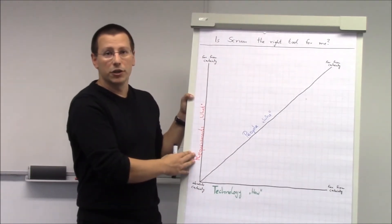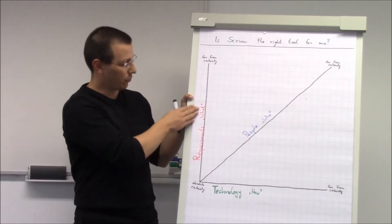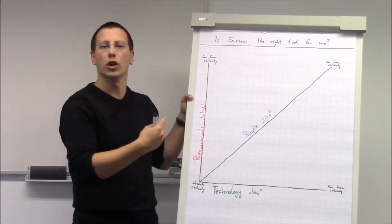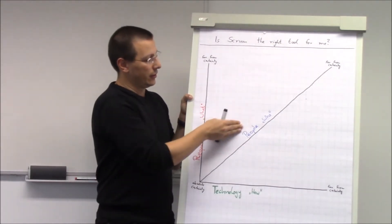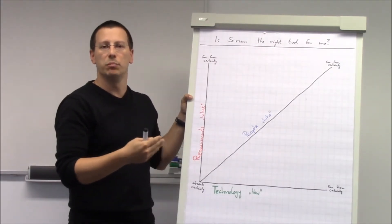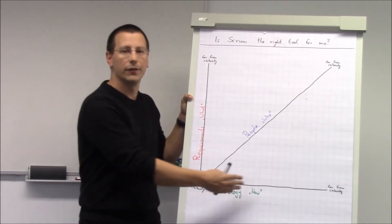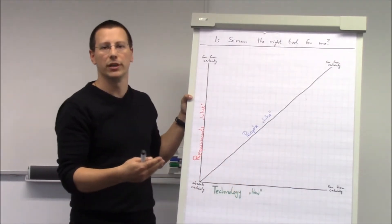This chart is structured with three dimensions. The first one is requirements, so about what are we building. The second dimension is about people, so who is building that. And the third dimension is about technology, the how we are building something.